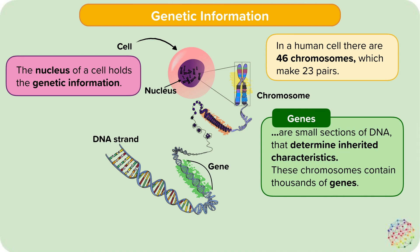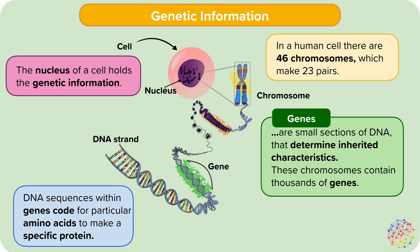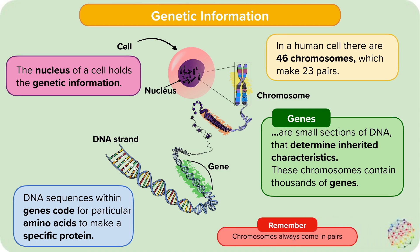Genes are small sections of this DNA that determine inherited characteristics. Each chromosome contains thousands of genes. The specific DNA sequences within each gene are what code for particular sequences of amino acids to produce specific proteins. Remember that chromosomes always come in pairs, as each chromosome pair will carry genes that code for the same characteristic. Humans have 46 in total, or 23 pairs.